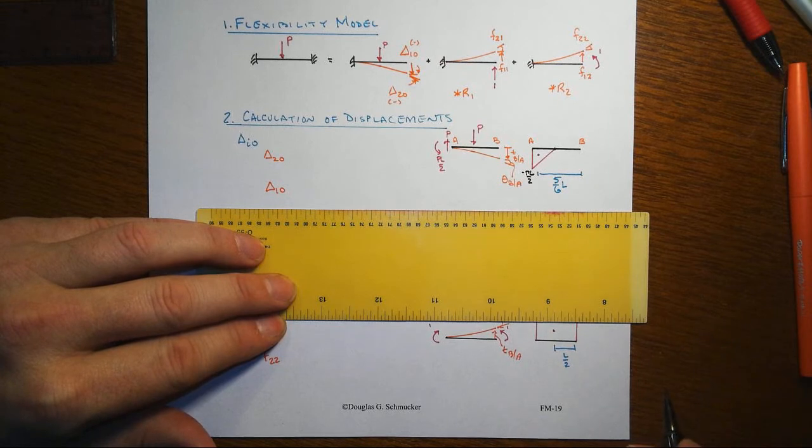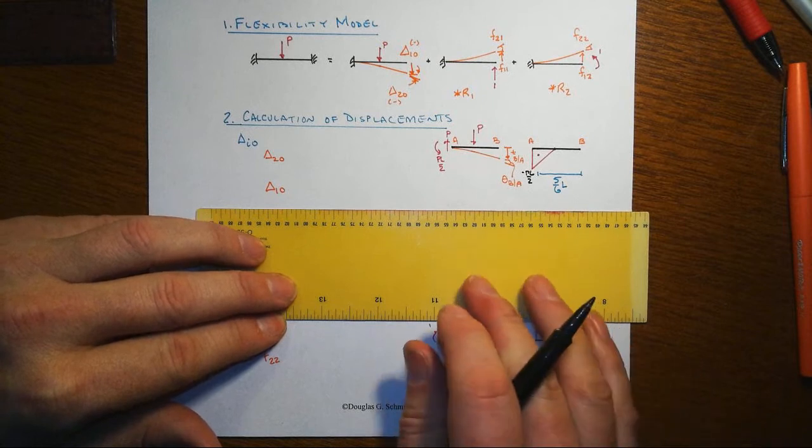Of course, we really want to divide by EI here to get the curvature diagram, but we'll handle that here in just a second.